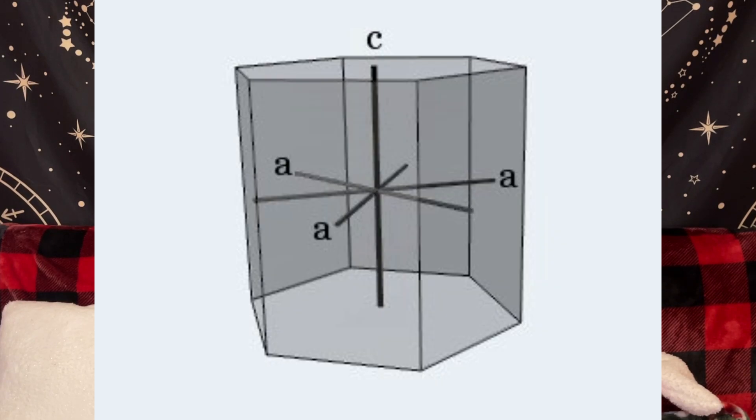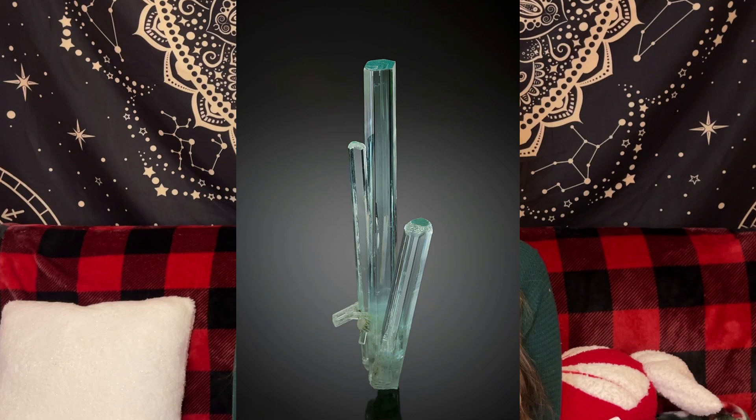Beryl can also form through metamorphism, where hydrothermal fluids interact with existing rocks and minerals, and can precipitate in cracks and crevices. Beryl often has inclusions of other minerals such as hematite, micas, pyrite, rutile, garnet, quartz, tourmaline, or epidote. Beryl is part of the hexagonal crystal system and usually forms long prismatic crystals — this hexagonal crystal system is really easy to spot in many raw specimens.